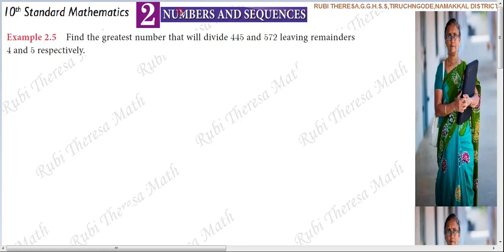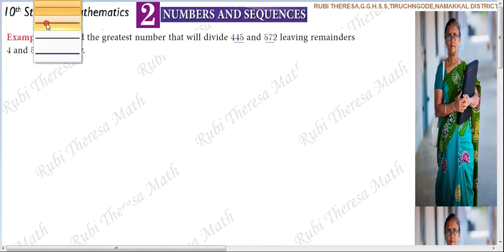Song of Parada. Example 2.5 Numbers in Sequences Lab, based on Euclid Division Lemma and Algorithm. Find the greatest number that will divide 445 and 572, leaving remainders 4 and 5 respectively. So, find the greatest number that will divide some numbers.